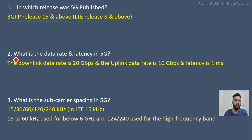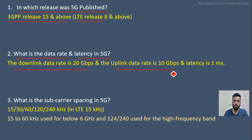My next question is: what is the data rate and latency in 5G? The downlink data rate is 20 Gbps in 5G and the uplink data rate is 10 Gbps. Latency is 1 millisecond in 5G, whereas latency in 4G was 10 milliseconds, so 5G is 10 times faster in terms of latency.